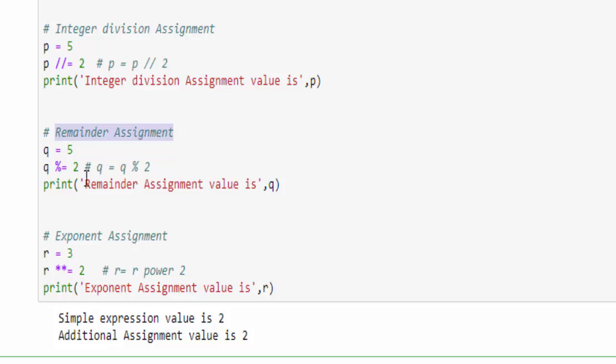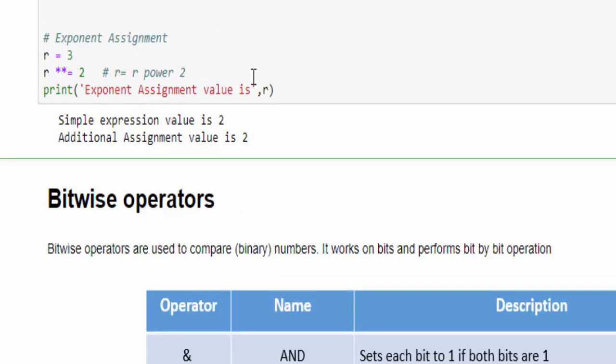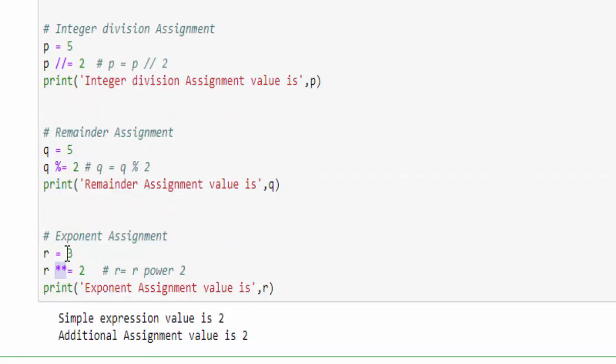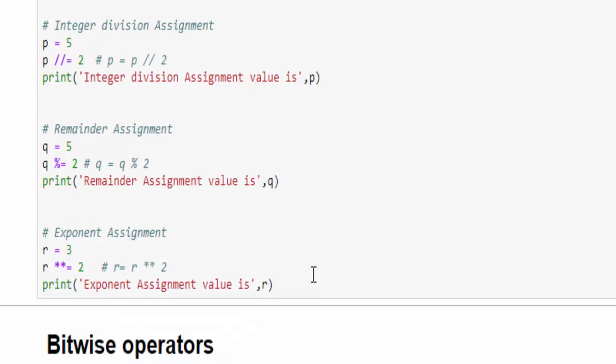Then for remainder assignment, percentage equal to. We can also say this as a modulus operator. q is equal to 5 percentage 2. When you divide that, the remainder will be 1. And the exponential assignment: when you mention double star, it is an exponential operator. Then equal to. This means r equal to r star star 2. So r equal to 3 power 2, 3 into 3, which is 9. We will run and see.